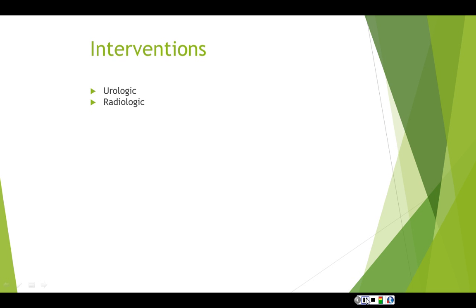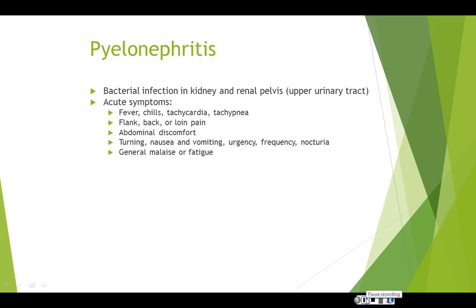If the problem continues or becomes bilateral, permanent kidney damage is much more likely. Pyelonephritis is a bacterial infection of the kidney and renal pelvis — inflammation of the kidney tissue, calyces, and pelvis. It is usually caused by bacterial infection that has spread up through the urinary tract, such as from an untreated bladder infection or from not completing a full course of antibiotics.